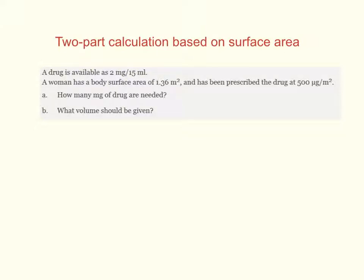This calculation requires two calculations, and it also doesn't fit — the first part of it at least — very well with the standard want-over-have drug calculation formula. So it's a nice one to look at to show the power of setting things out in a table. It's similar to example 6 in module 1b on your Moodle site. After you've watched this clip, you might like to go back and try the last couple of questions in the practice problems under module 1b.